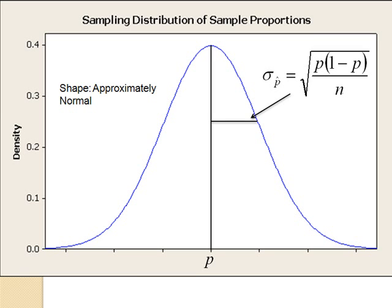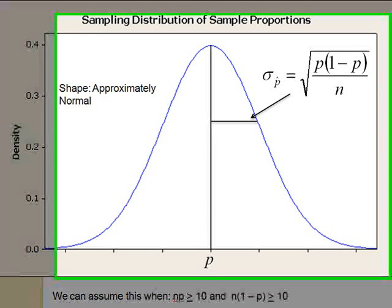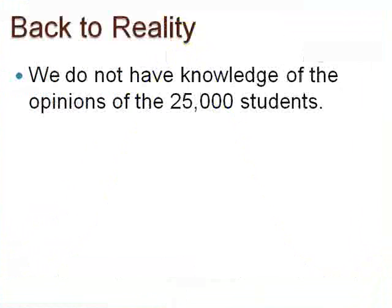Textbooks differ on the exact values, but we could say that this sampling distribution can be treated as approximately normal when np is greater than 10 and n times (1 minus p) is greater than 10. In reality, we will not know the opinions of a population of 25,000 students, so we will try to estimate it.